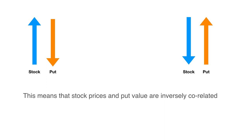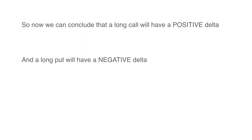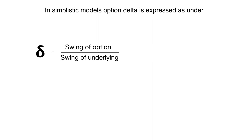So now we can conclude that a long call will have a positive delta. That is, the value of a long call will go up if the value of the underlying goes up and vice versa. And a long put will have a negative delta. That is, if the value of the underlying goes up, the value of a long put will actually come down because it is inversely related. In the Black-Scholes model, the value of option delta is represented by ND1.